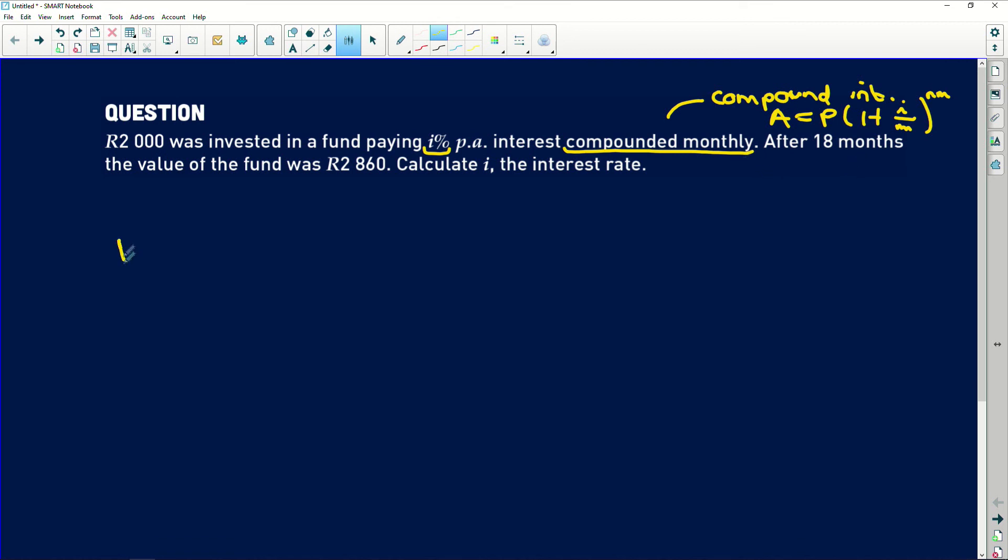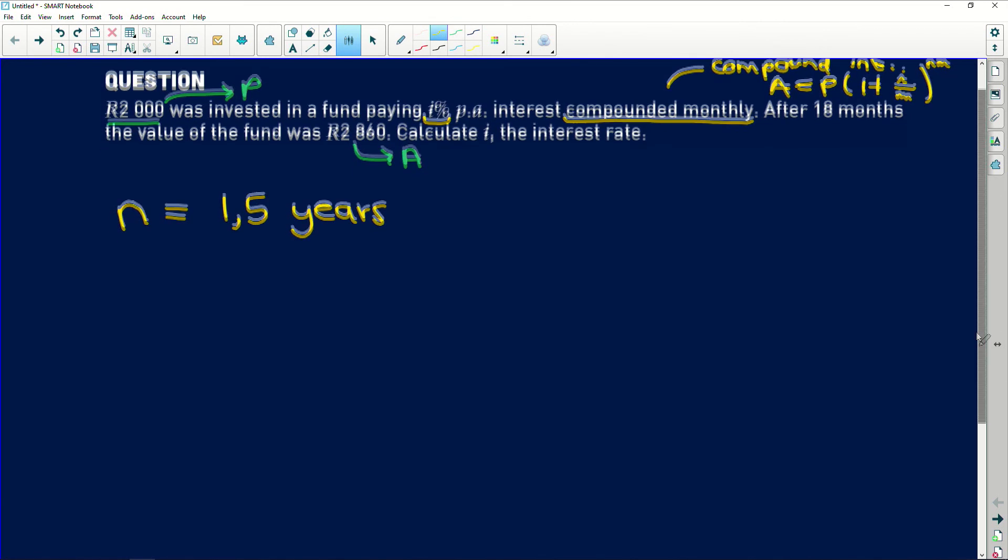Now after 18 months, remember N is always expressed in years. So we need to convert our 18 months to years. 18 months is easy, it's one and a half years. So now we need to identify the variables in our equation. We know that after 18 months we have 2860, which is our A amount, our accumulated amount. And 2000 would be our principal amount.